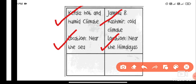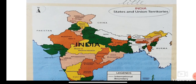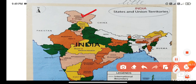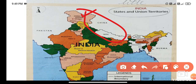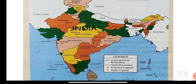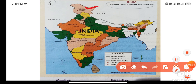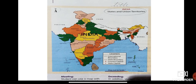Kerala has hot and humid weather, whereas Jammu and Kashmir has a cold climate. Kerala is located near the seashore, whereas Jammu and Kashmir is located near the Himalayas. From the given map of India you can see Jammu and Kashmir located on the Himalayan mountain range, and Kerala located near the seashore at the bottom. I hope you now understand the difference between the two places.